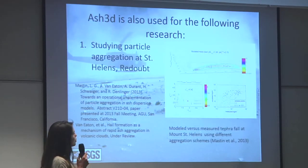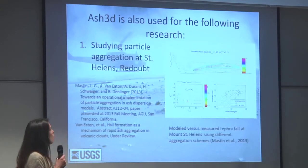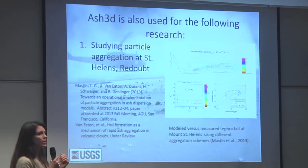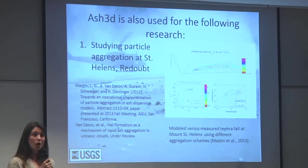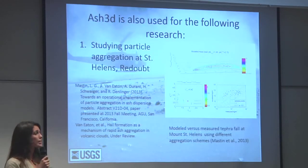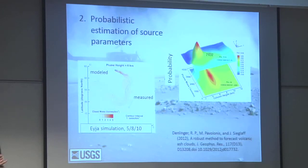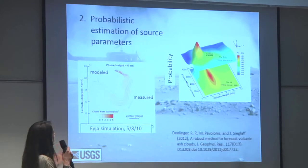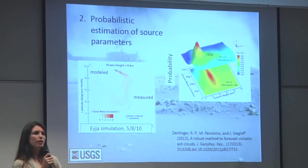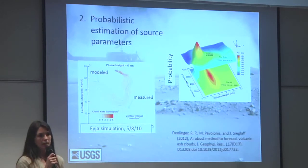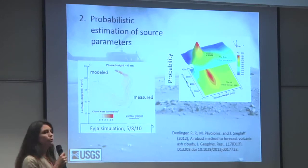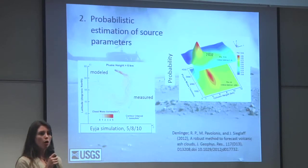Areas being used to explore research questions include the aggregation problem, which is very poorly described in volcanic dispersal models — there's only one model in existence that tries to capture the actual physics of aggregation. This is something actively being worked on using field data from eruptions to better parameterize this process. Another area is developing probabilistic estimation of source parameters using a Bayesian technique to inform forecasts based on incoming satellite data, which is an emerging topic in ash dispersal — how can you best use real-time satellite information to inform ongoing simulations?